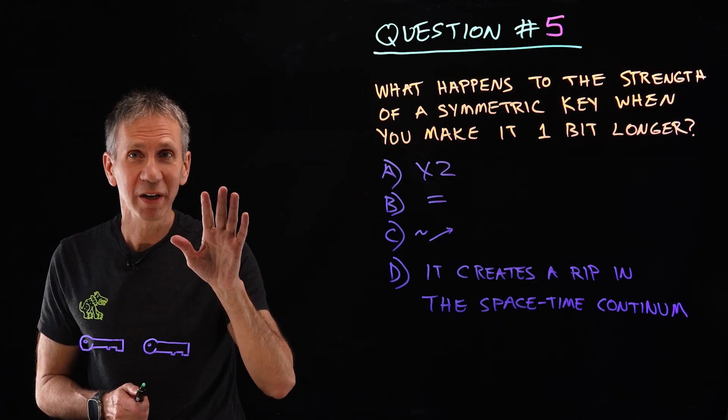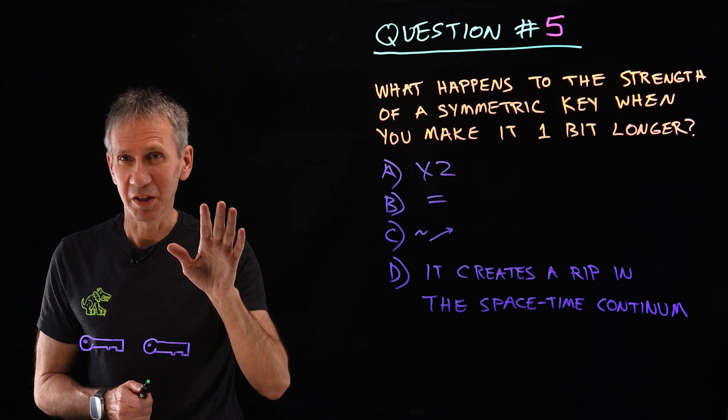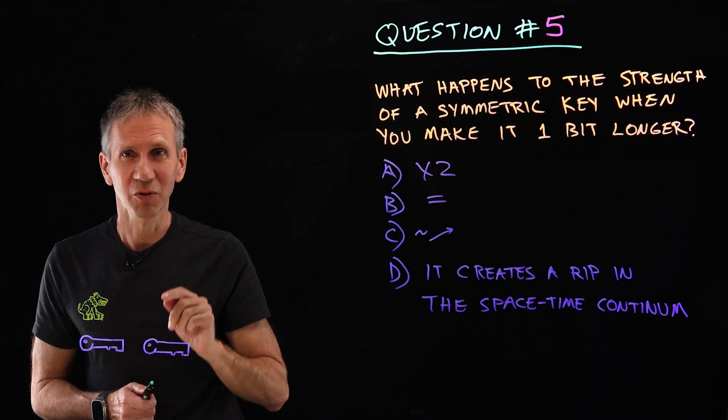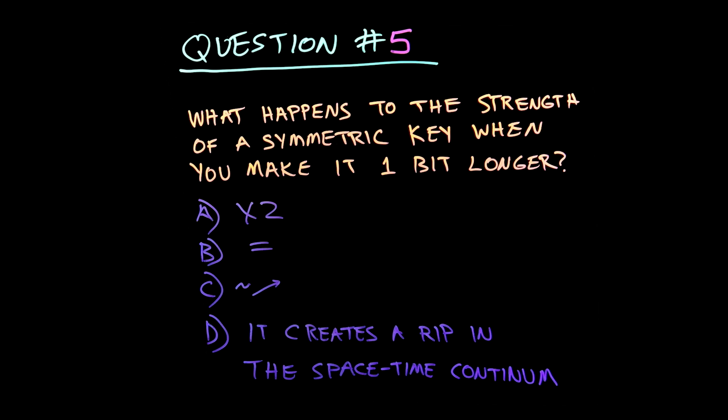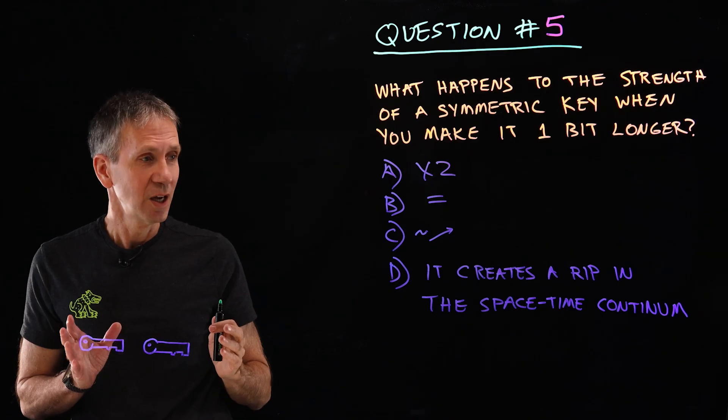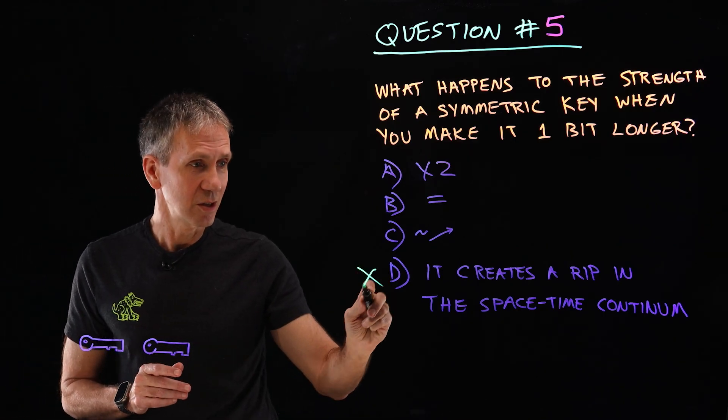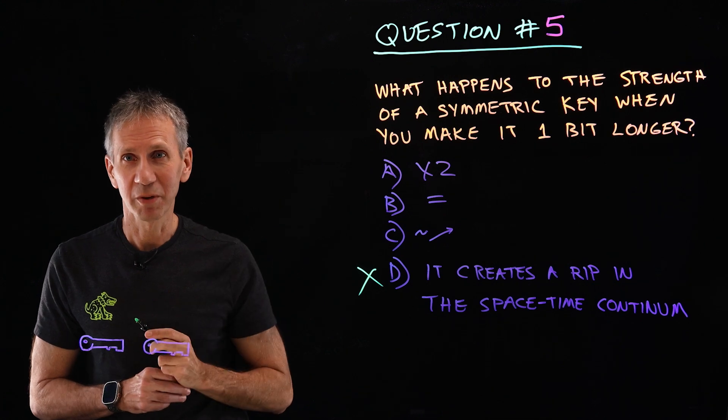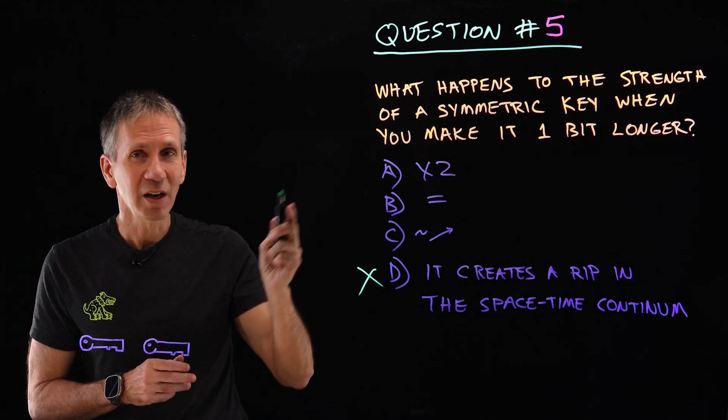Okay, for question five, we're going to make it a little more difficult. This has been really easy so far, I know. So let's do a bit of a challenge. What happens to the strength of a symmetric key when you make it one bit longer? Well, does it double? Does it stay the same in terms of strength? Does it get slightly stronger? Or does it create a rip in the space-time continuum? I hope to goodness that this is not the case, because then we'd all be in trouble. So then, now we look at this.